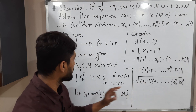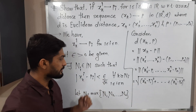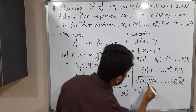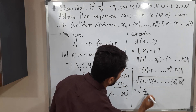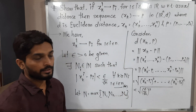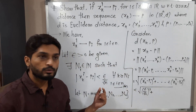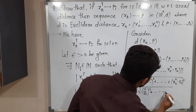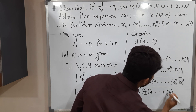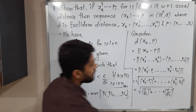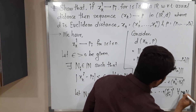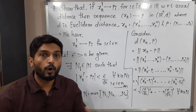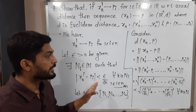By the definition of the norm, this equals the square root of (XK1 minus P1)² + (XK2 minus P2)² + ... + (XKn minus Pn)². Now by our earlier result (denoted *), each term |XKi minus Pi| is less than epsilon by root n, so each squared term is less than (epsilon/√n)². This holds for all k greater than or equal to capital N, since N is the maximum of all Ni's, so all inequalities are true for this N.